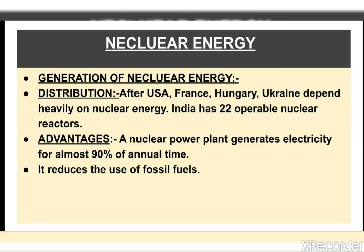Nuclear energy is the energy in the nucleus or core of an atom. Atoms are tiny particles that make up every object in the universe, and there is enormous energy in the bonds that hold atoms together. Nuclear energy can be used to make electricity, but first the energy must be released. It can be released from atoms in two ways: nuclear fission, which is the division of one atom into two, and nuclear fusion, which is the combination of two lighter atoms into a larger one.